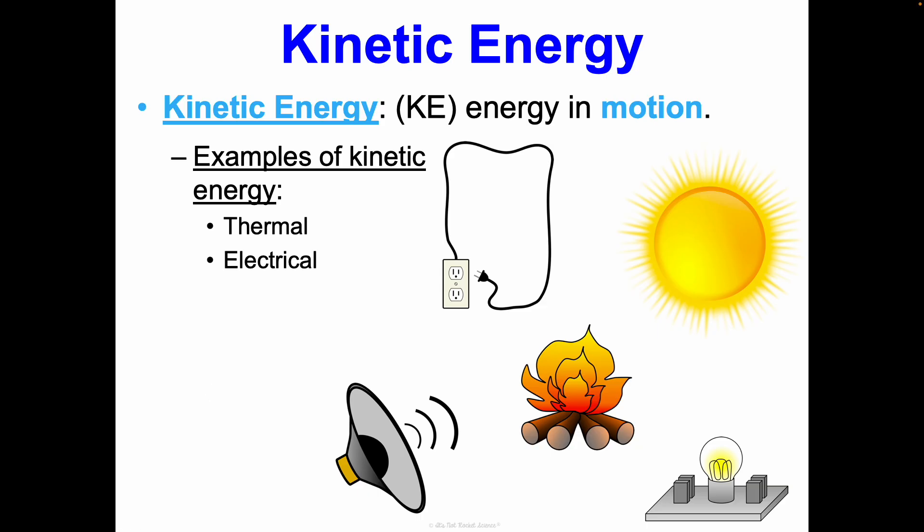Electrical energy could be considered kinetic or potential. Typically, when we think of electrical, we're thinking about it stored maybe in a battery as potential. But then if you're looking at the actual flow of electrons of electricity through this wire here, that would be considered kinetic because that flow of electrons, that energy is moving in those electrons. We're going to come back to this in our electricity and magnetism unit.